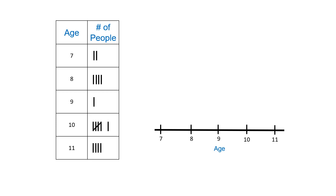If you take a look at our page or at your screen, you'll see that the line plot is down here and it looks like a number line. It's set up as a number line and we use X's to record how many times a number happens. On the left, you have a tally chart, and our tally chart is talking about ages and the number of people.